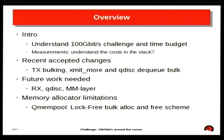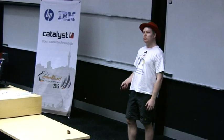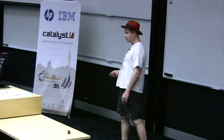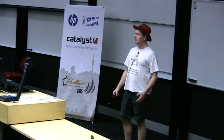Today I'm going to talk about and make you understand the challenge of doing 100 gigabit and the insane time projects involved in that. I also have some measurements and I want to make you understand the crazy time budget. I'm going to talk about some recent changes which have been accepted where we do transmit bulking with the XMIT more API and we do QDISC DQ bulking.